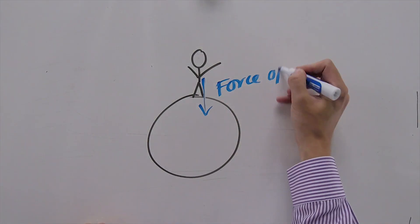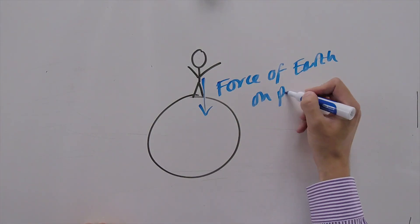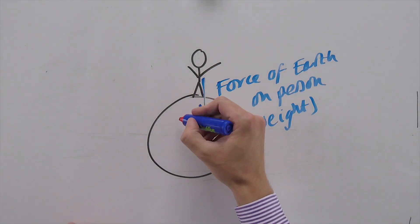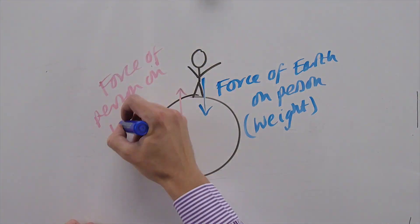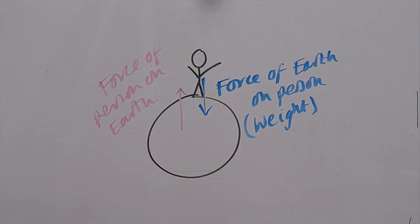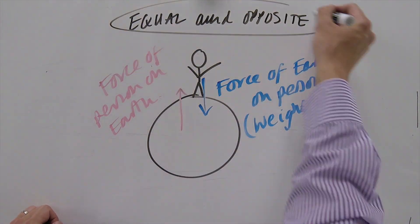Let's do a couple of examples of that. You kick a football, you put a force on the football, it puts an equal and opposite force on you. The earth is pulling you down with a force which is your weight. You are pulling the earth upwards with an equal and opposite force. But because you're much lighter, you accelerate downwards — the earth doesn't accelerate upwards. You're sitting on a seat, you put a force on the seat, the seat puts a force on you.